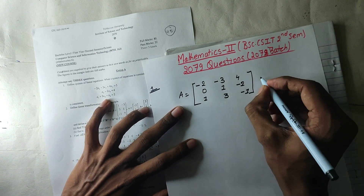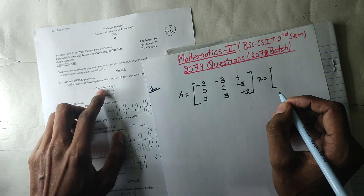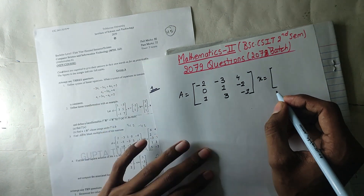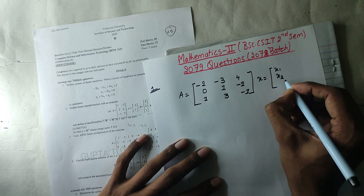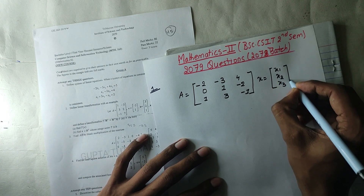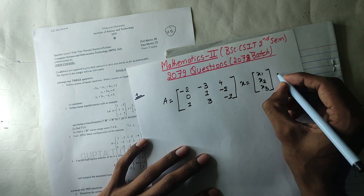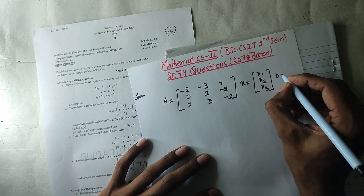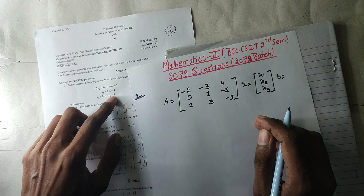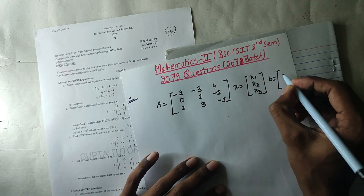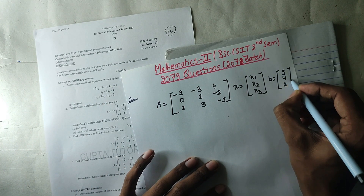Now, x will be equal to x1, x2, x3. So x1, x2, x3. Now let's test. b will be equal to 5, 4, 2. 5, 4, 2. Now you must bring down the elementary row operations and apply them.